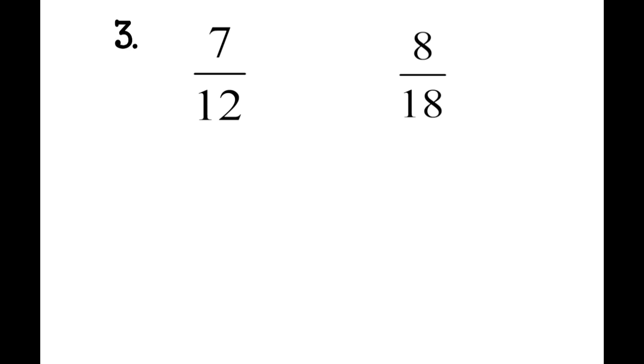Okay, number three is 7/12 and 8/18. And these do not have a common denominator. So to be able to compare them, we need to have a common denominator.